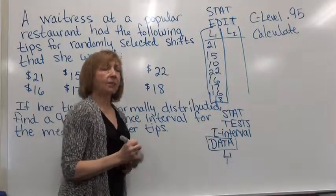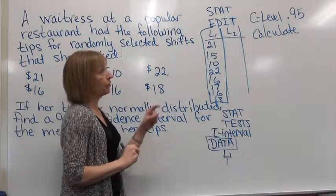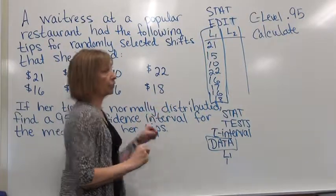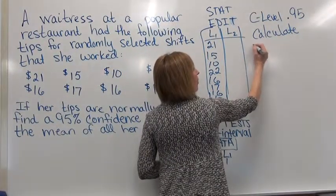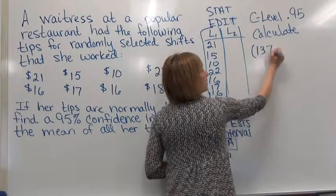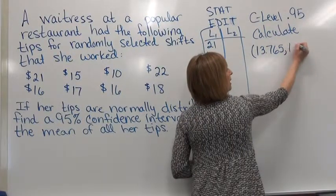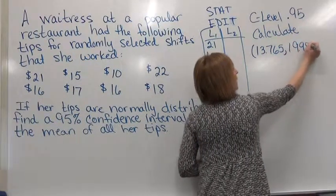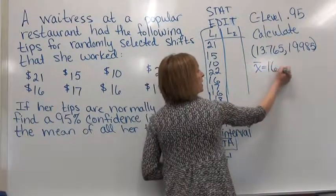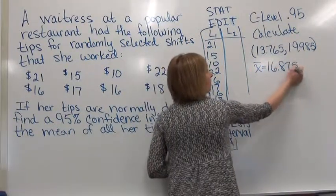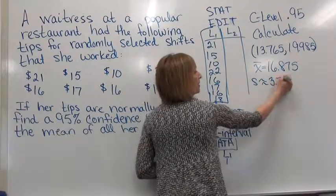Now sometimes they'll have this in a menu. Sometimes they'll have it where you just have these inputs that you have to do. But when you're looking at calculate and push enter, what you'll see next is you'll have an open parenthesis, 13.765, comma, then 19.985. And it'll tell you X bar is equal to 16.875 and S is approximately equal to 3.720.